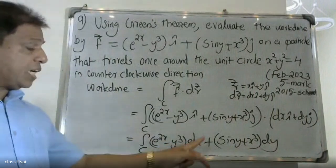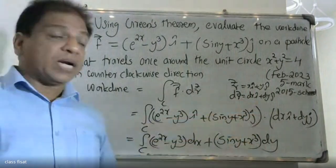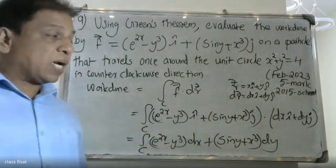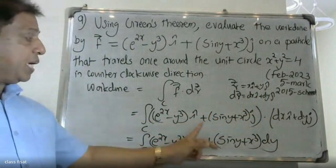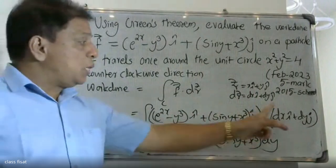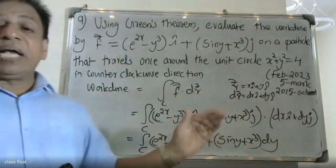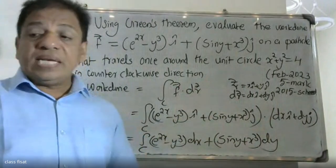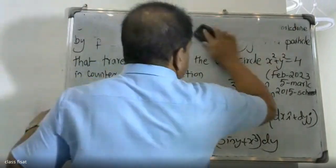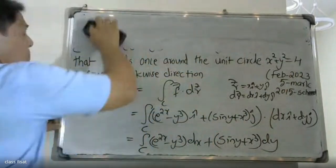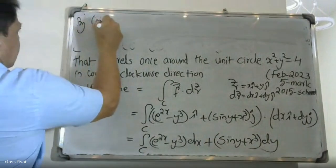This simplifies to the integral of (2x minus y³) dx plus (sin y plus x³) dy. I am going to apply Green's theorem to evaluate this.